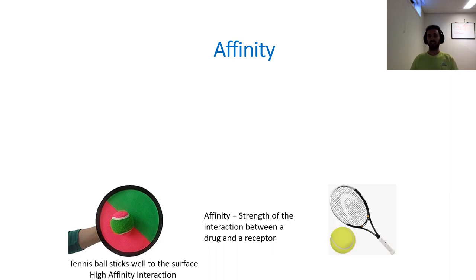On the other hand, let's look at a tennis racket and a tennis ball. No matter how hard or weak you throw a tennis ball at a tennis racket, the ball is going to bounce off of the racket. There's not a long period of time where the tennis ball will interact with the racket. It will bounce off pretty much right away. We would say that these have a low affinity interaction. They don't interact for a long period of time.